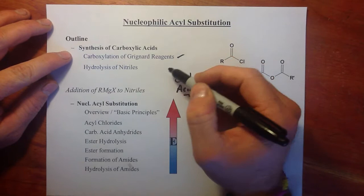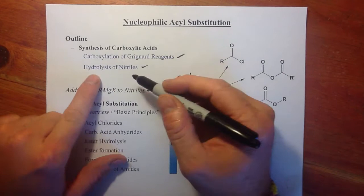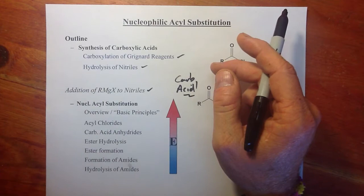We will look at carboxylation of Grignard reagents, hydrolysis of nitriles, and then close by drawing some correlations between hydrolysis of nitriles and addition of Grignard reagents to nitriles.